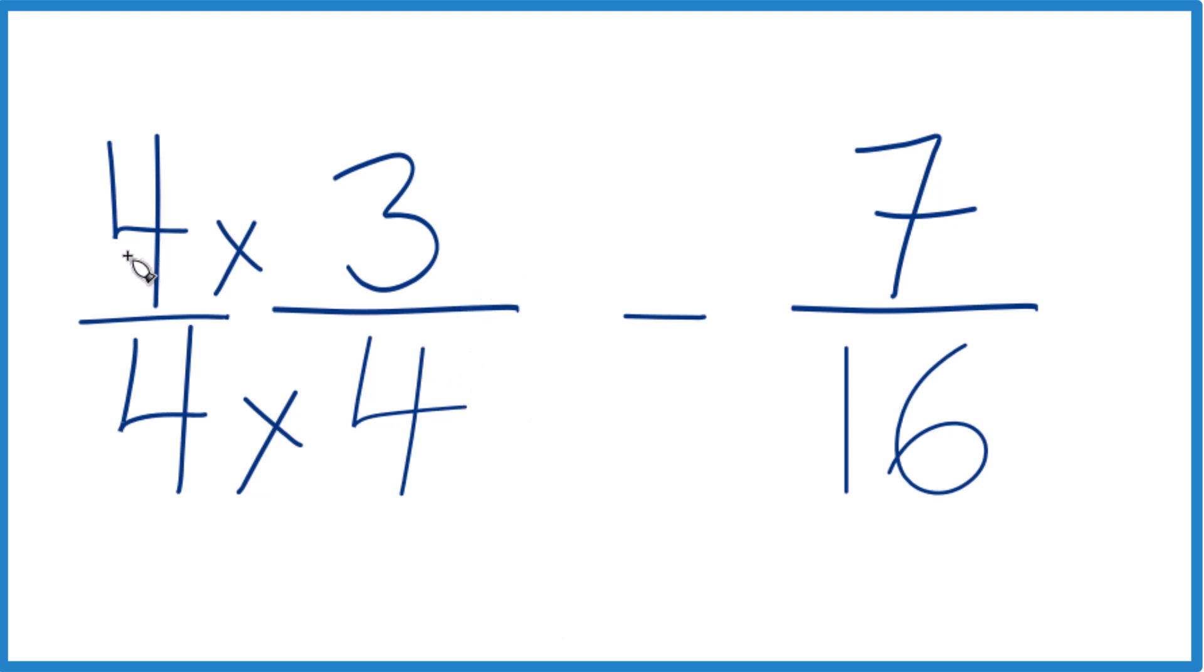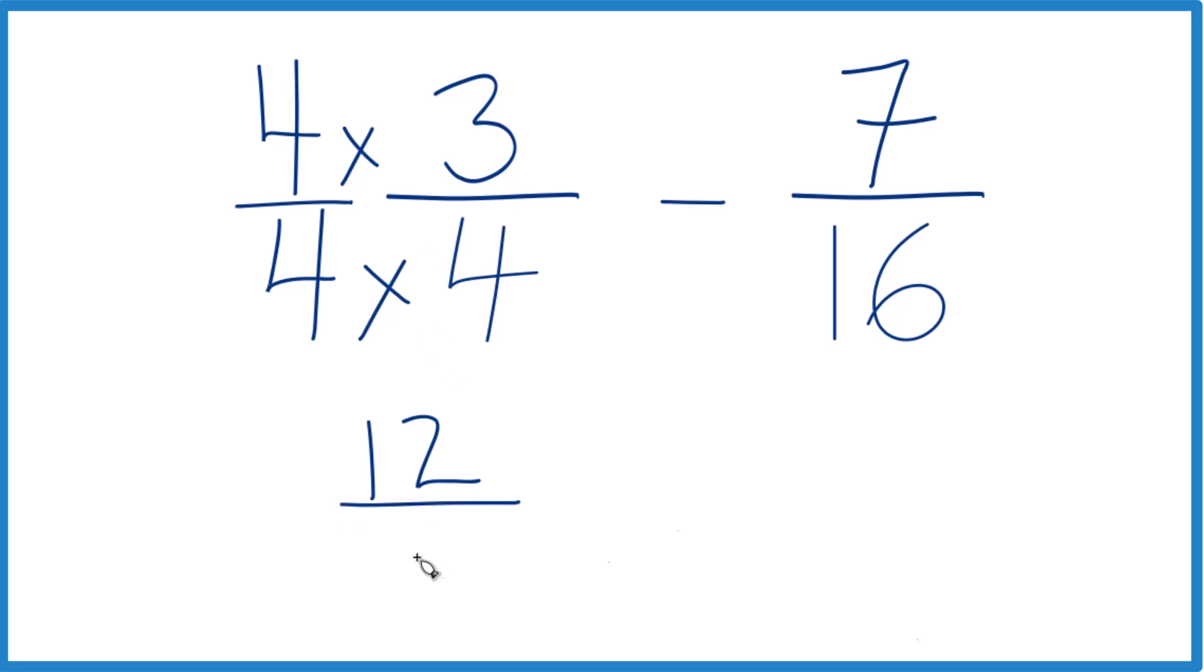But now we can do this. 4 times 3, that's 12. 4 times 4 is 16. And then over here we could subtract 7 sixteenths.